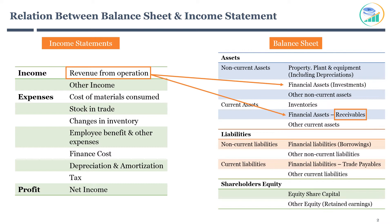The next line on the income statement is other income. Other income is generated from various sources like dividend, interest on investment, sale of subsidiary companies, and rental income.